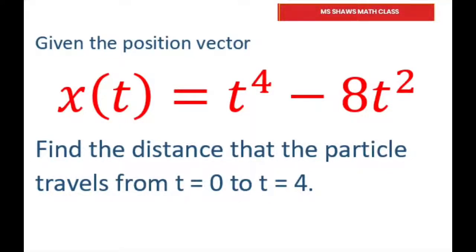Hi everyone. Given the position vector x(t) = t^4 - 8t^2, we need to find the distance that the particle travels from t = 0 to t = 4.